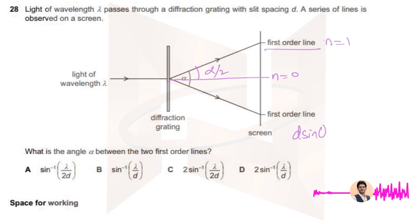d sine theta should be equal to n lambda, and d sine of alpha by 2 should be equal to 1 lambda.